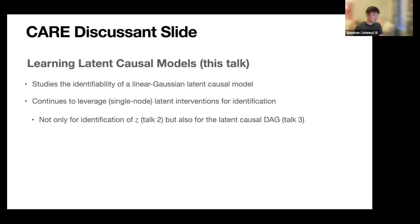Today's talk continues in the direction of studying conditions under which we can perform causal reasoning in the latent space, this time using a linear Gaussian latent structural causal model but still using interventional data. It's a nice way to follow up our previous talk because it aims at the same thing — not only identification of latent variables, but also the latent causal DAG. In fact, it goes further because with the linear Gaussian structure, we actually identify the latent SCM altogether.